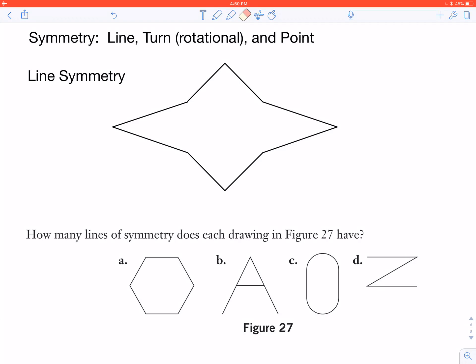We could have line symmetry, turn symmetry, also known as rotational symmetry, and point symmetry.